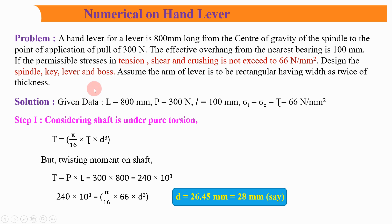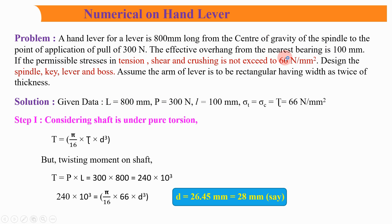The first step to solve a design problem is to write the given data. Given: capital L is equal to 800 mm, as the hand lever is 800 mm long from the center of gravity of the spindle. The load P is equal to 300 Newton.